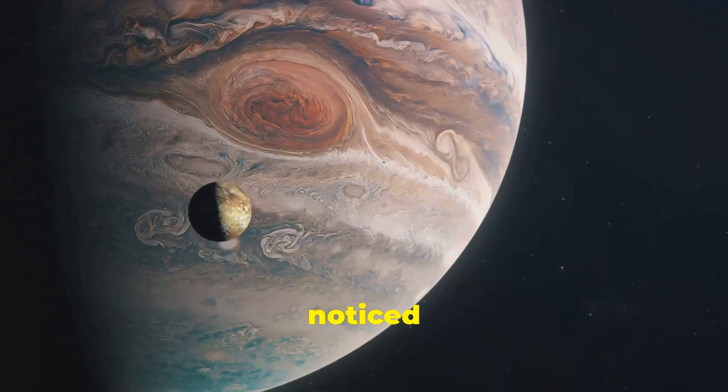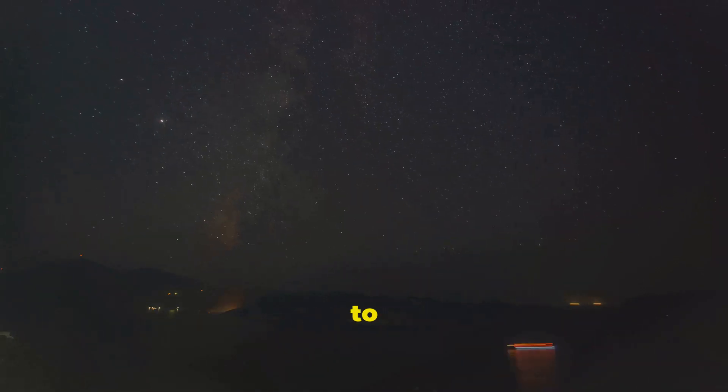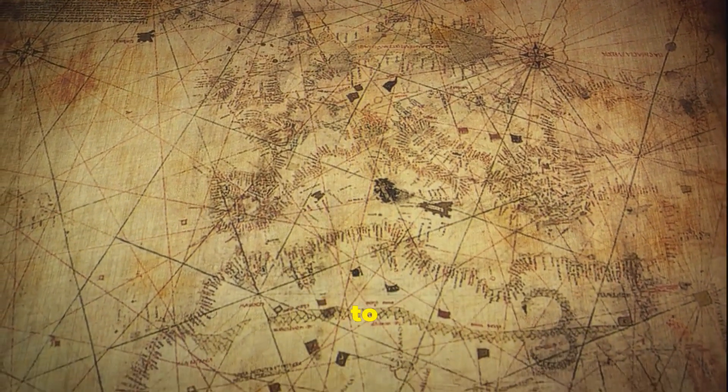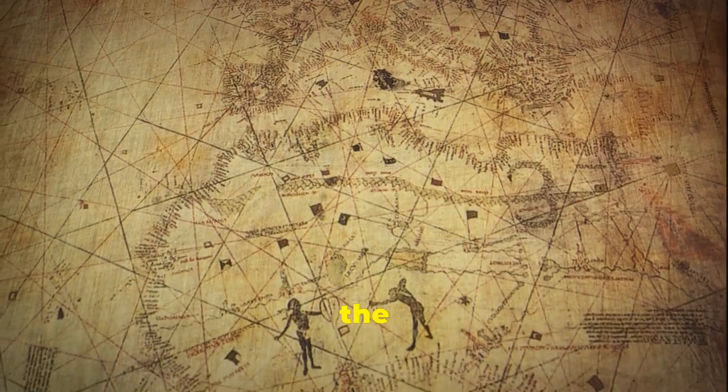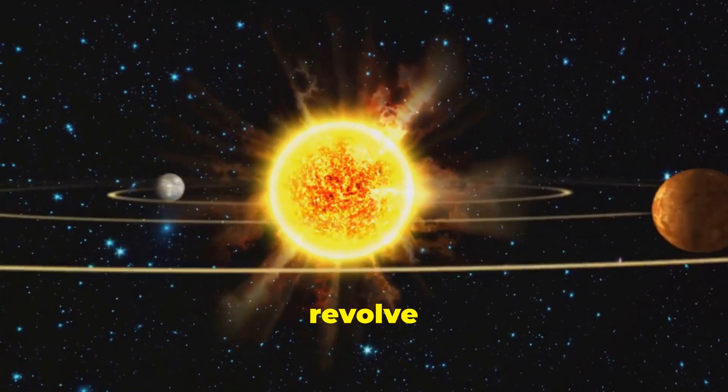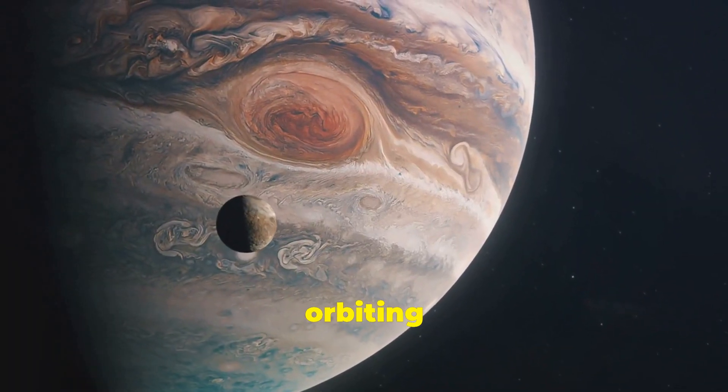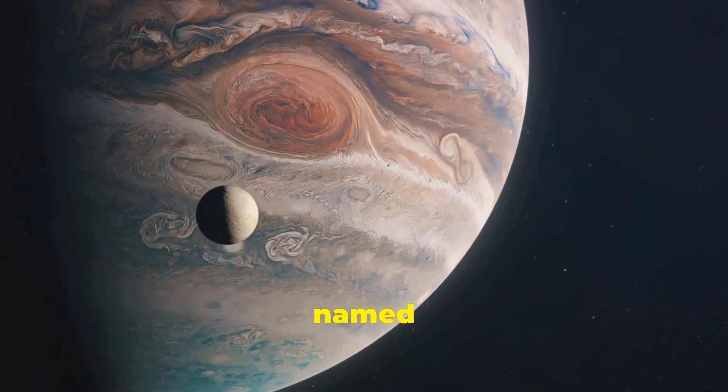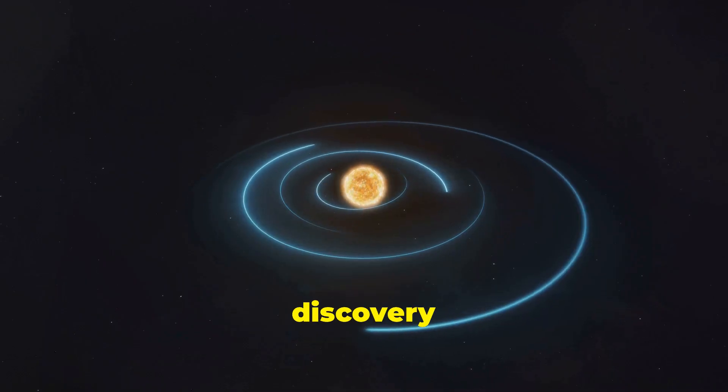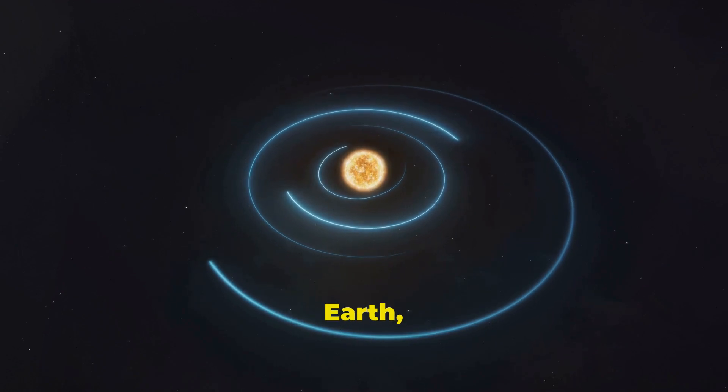Over subsequent nights, he noticed what appeared to be three small, bright stars near the planet, which seemed to shift positions relative to Jupiter. This observation was contrary to the prevailing Ptolemaic model of the universe, which posited that all celestial bodies should revolve around the Earth. These stars were actually moons orbiting Jupiter, which he later named Io, Europa, Ganymede, and Callisto. This discovery provided concrete evidence that not everything in the universe orbited the Earth, a cornerstone of the heliocentric theory posited by Copernicus.